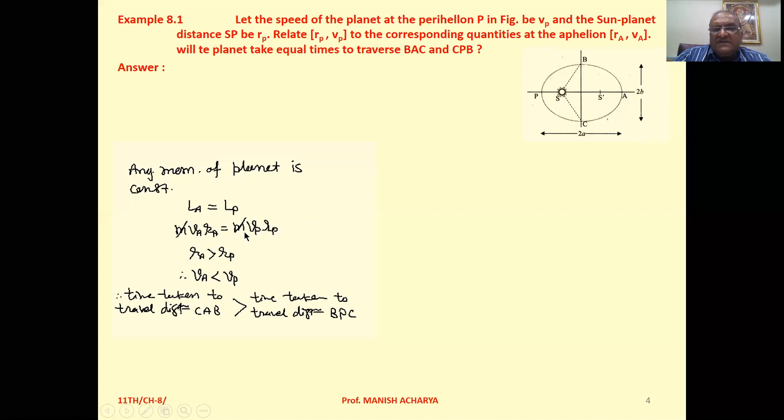Now mass cancels. So from this equation mathematically we can understand: rA is greater than rP from the figure we can see, therefore definitely vA is less than vP.